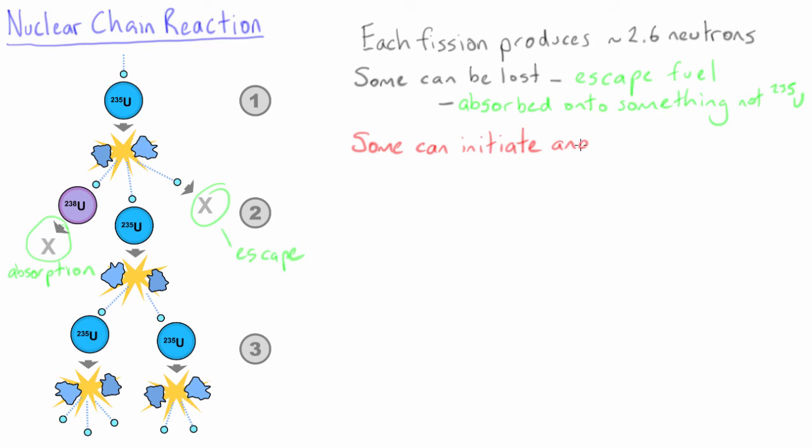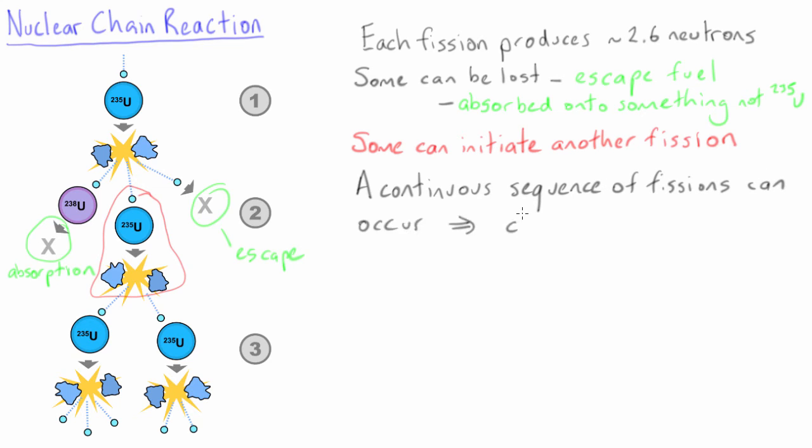However, some of them might be absorbed onto another uranium-235 nucleus in the target and initiate another fission reaction. This will generate more neutrons. Under the right conditions, each fission can generate sufficient neutrons that a continuous sequence of fission reactions occurs. This is known as a chain reaction.